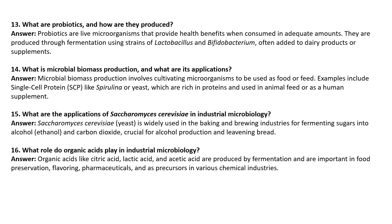What is microbial biomass production and what are its applications? Microbial biomass production involves cultivating microorganisms to be used as food or feed. Examples include single cell protein, spirulina, and yeast, which are rich in protein and used in animal feed or as human supplements. Saccharomyces cerevisiae is widely used in baking and brewing for fermenting sugars to ethanol and carbon dioxide, crucial for alcohol production and leavening bread.